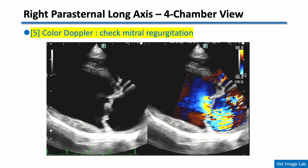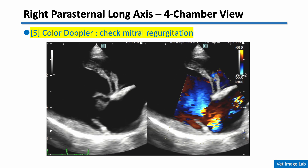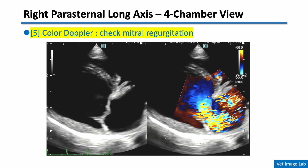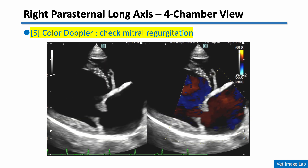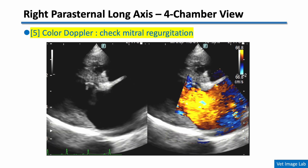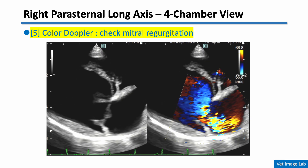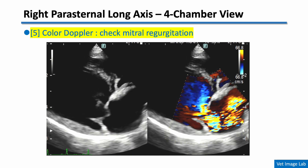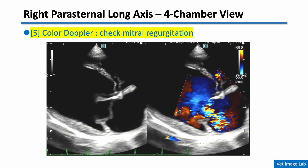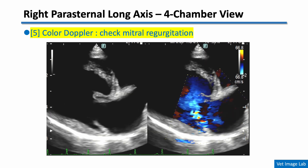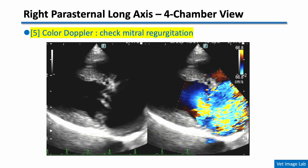Finally, in this four-chamber view, we use color Doppler to check for mitral regurgitation. The mosaic flow pattern with multiple colors indicates turbulent blood leaking backward into the left atrium during systole. The presence, direction, and extent of this color jet help estimate the severity of mitral regurgitation. We'll discuss this further in the left apical view in more detail.